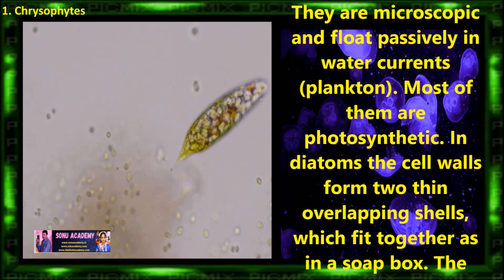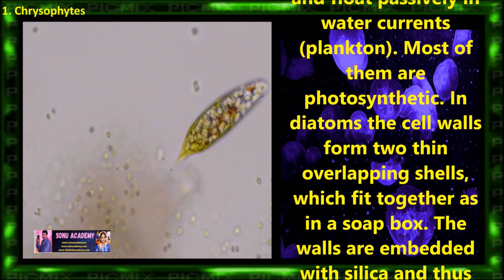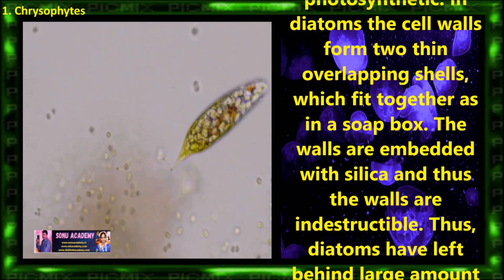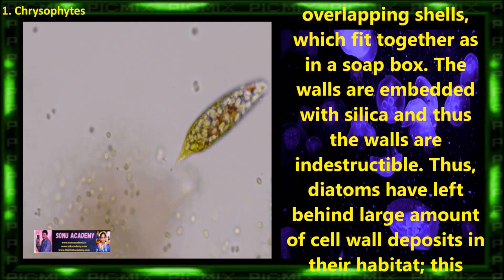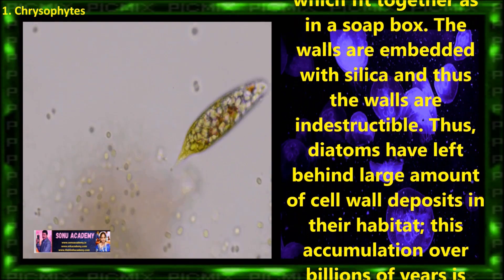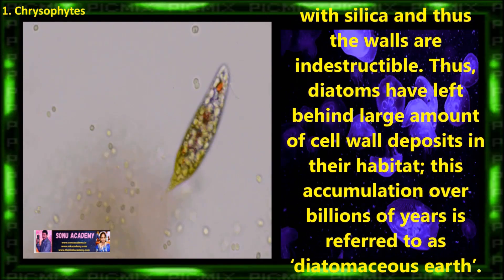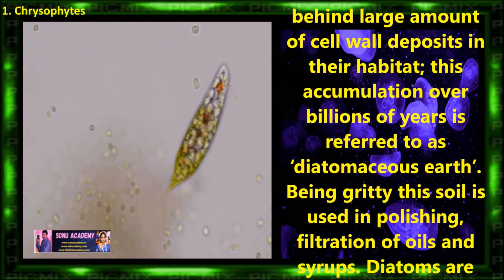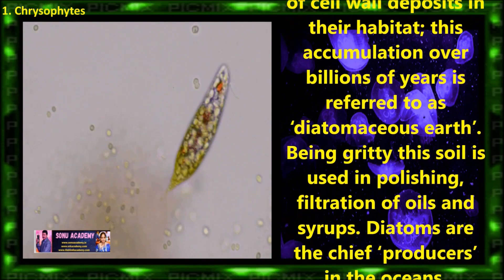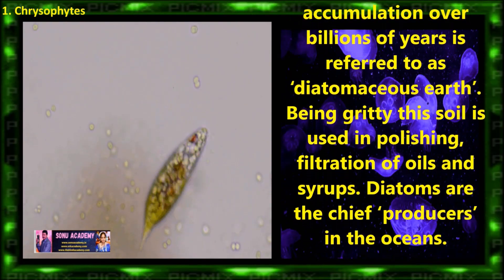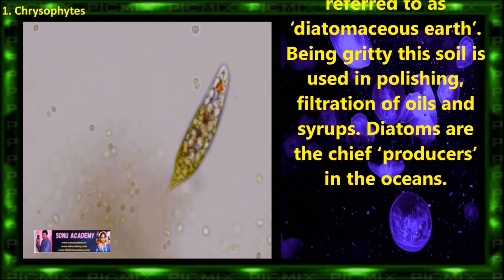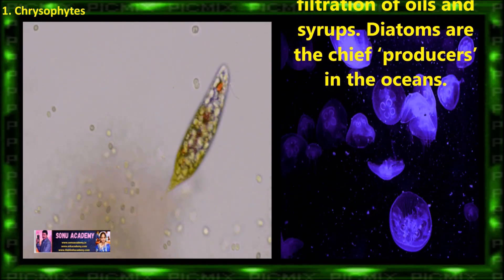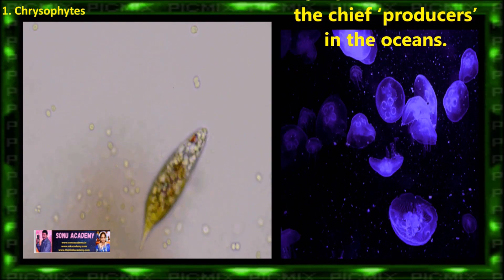In diatoms, the cell wall forms two thin overlapping cells which fit together as in a soapbox. The walls are embedded with silica and thus the walls are indestructible. The diatoms have left behind a large amount of cell wall deposits in their habitat. This accumulation over billions of years is referred to as diatomaceous earth. Being gritty, this soil is used in polishing, filtration of oils and syrups. Diatoms are the chief producers in the oceans.